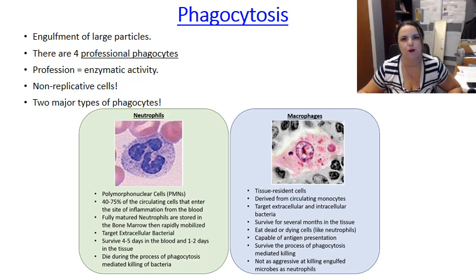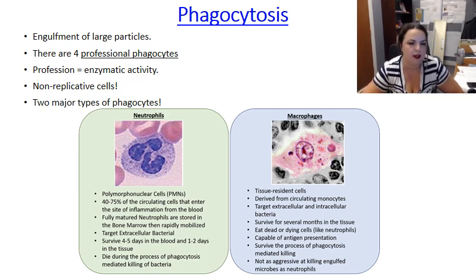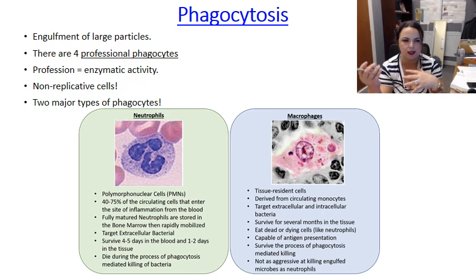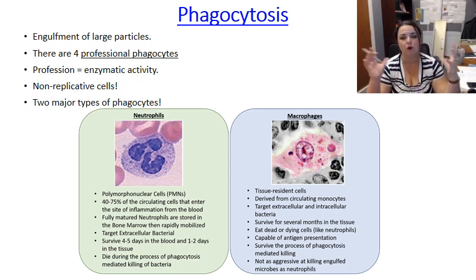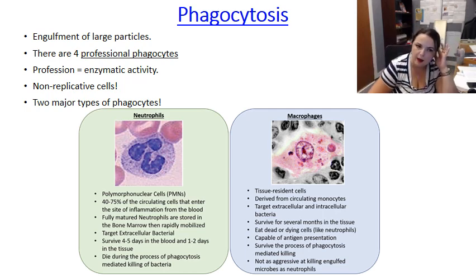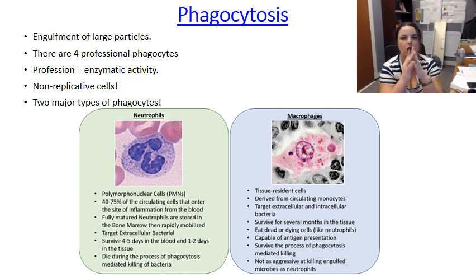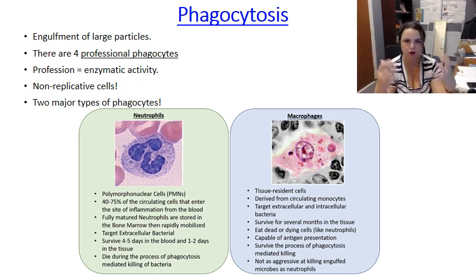What is phagocytosis? Phagocytosis is basically the process by which cells of the innate immune system engulf large particles — and by large, I mean 0.5 micrometers or greater. That's pretty big when you think about the size of a cell. All animal cells in general are able to ingest soluble molecules.